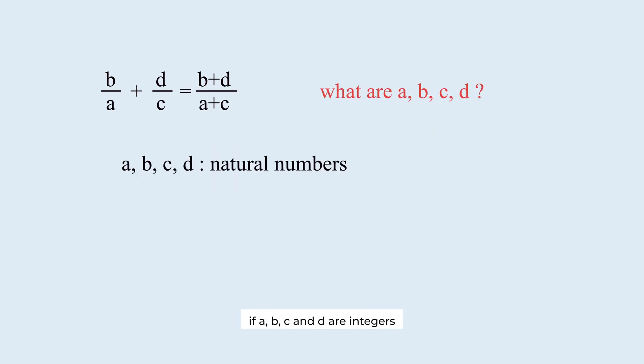What happens if a, b, c, and d are integers instead of natural numbers? The conditions have changed. Will the solutions change as well?